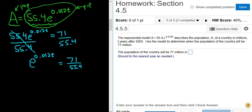We're looking for T, but T is in the exponent. To get rid of the e, we'll take the natural log on both sides. Then these cancel, and you get 0.012T.